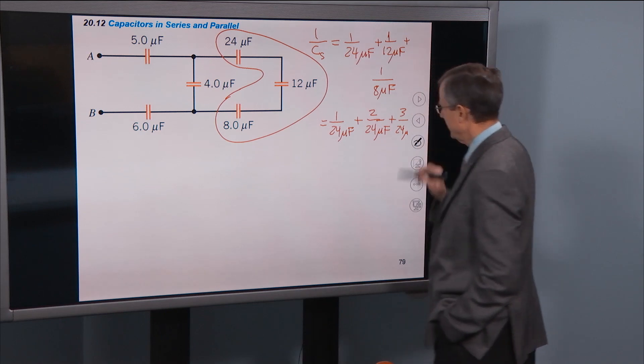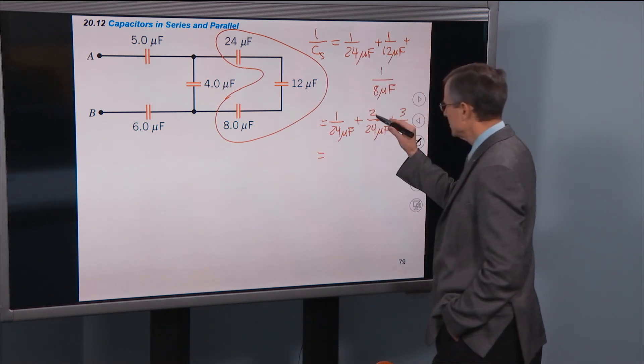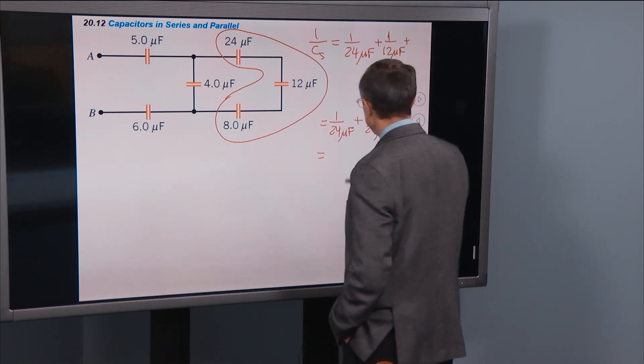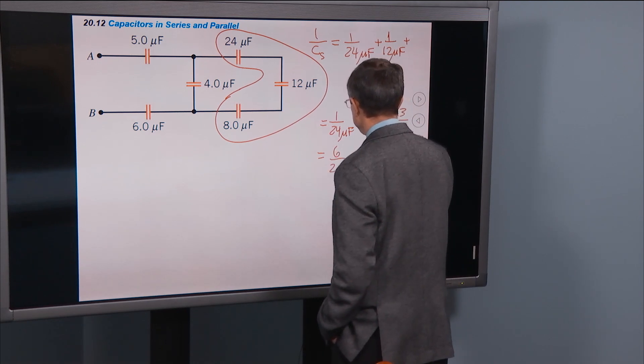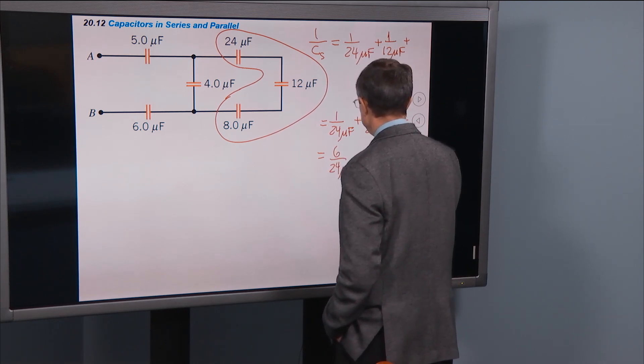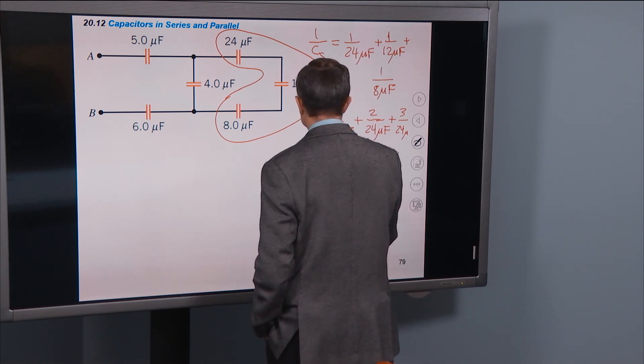There's an F right here. So 1 plus 2 plus 3 gives our old friend 6 over 24 microfarads. And that's supposed to equal 1 over Cs.